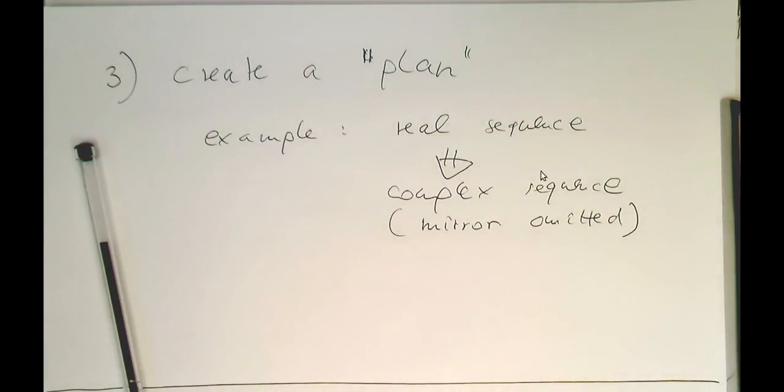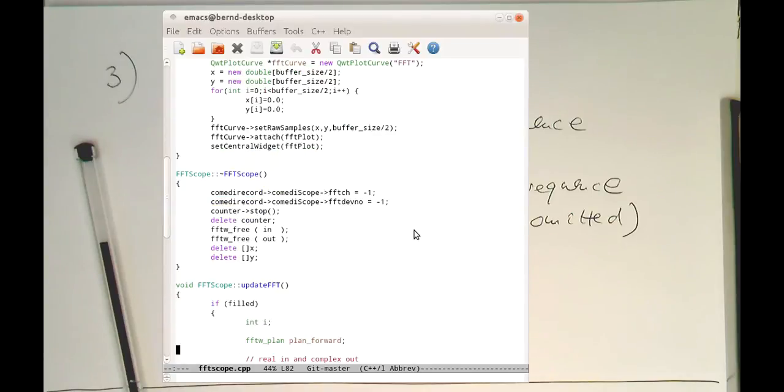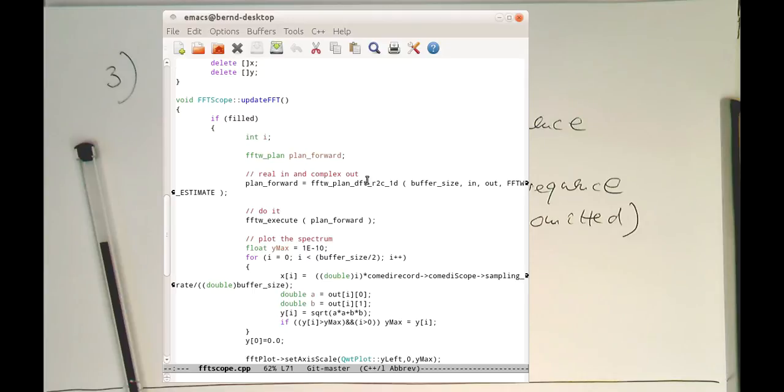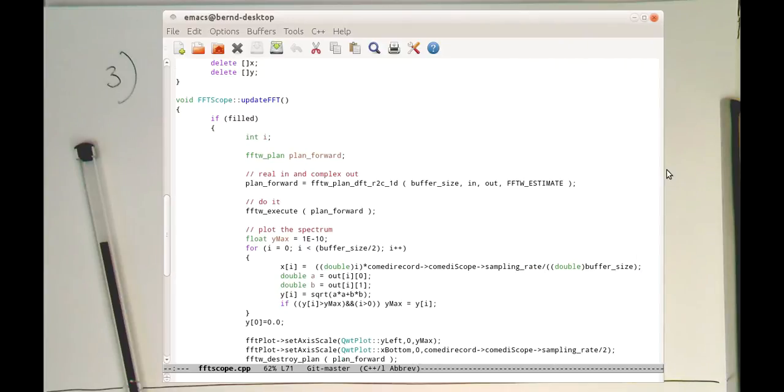So let's have a look at the code, how this is done in the code. So that's our emacs there. So we go a bit further up here. So this was our allocation. Let's scroll down to our plan. Make this a bit wider. So this is our bit we are looking at now.